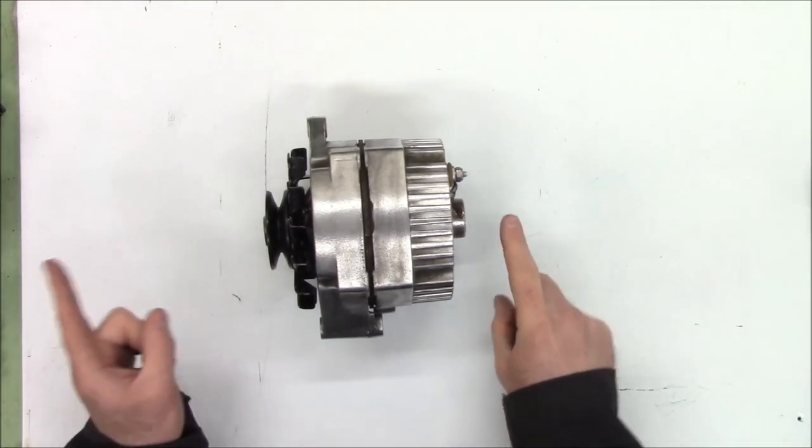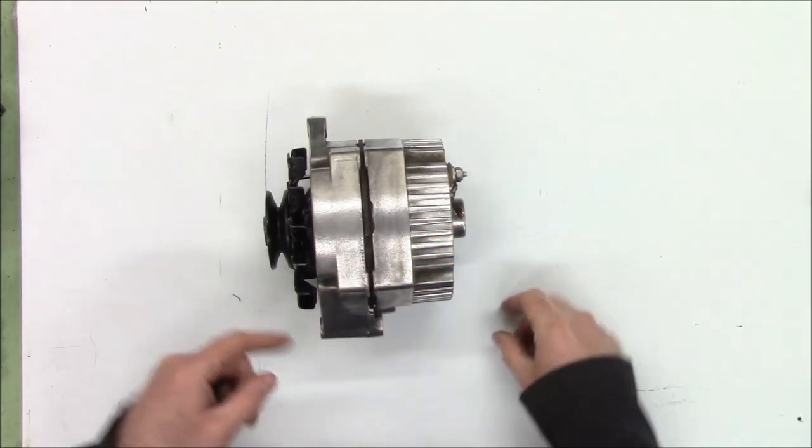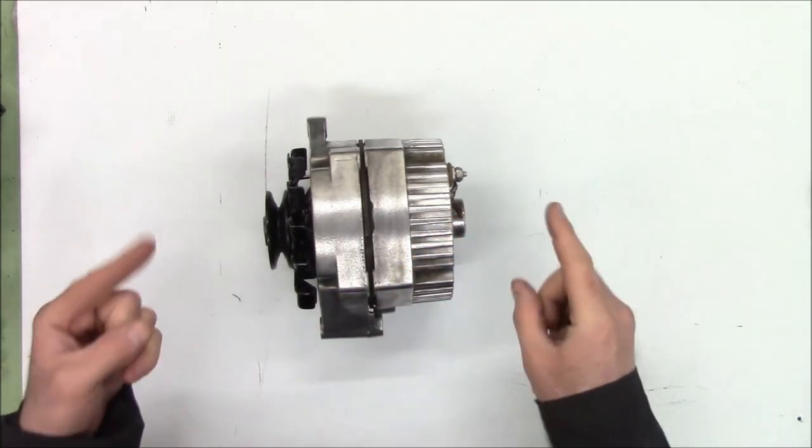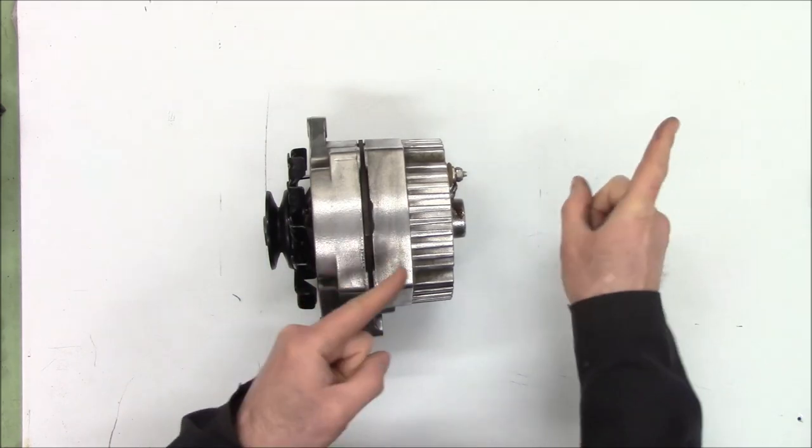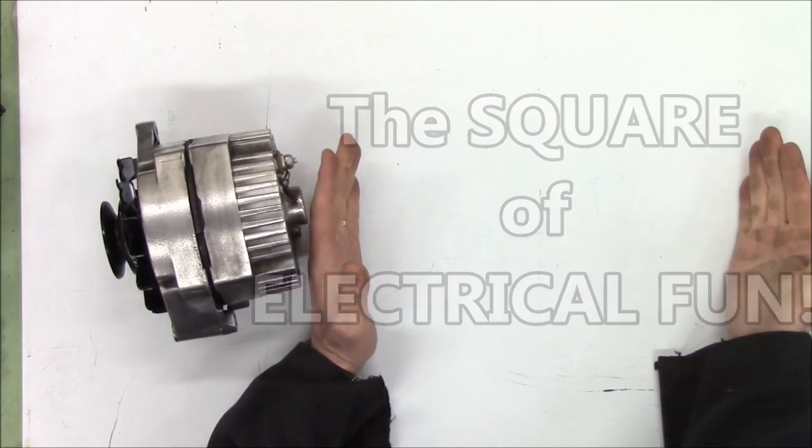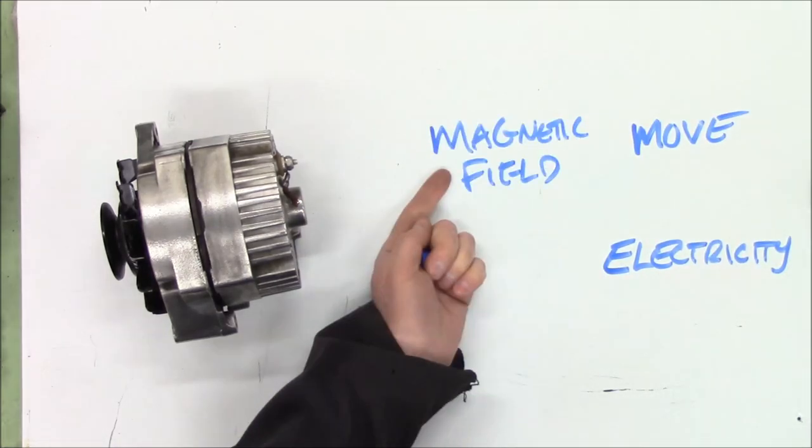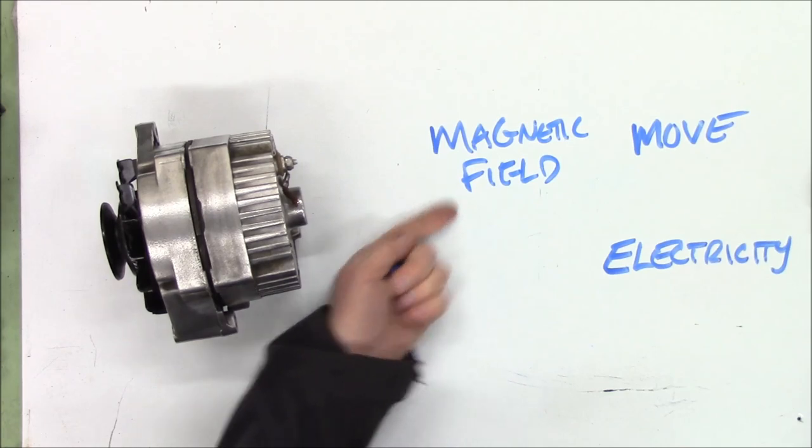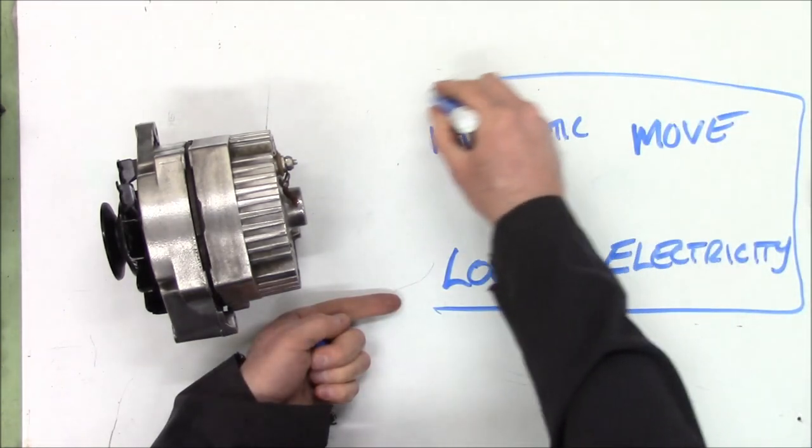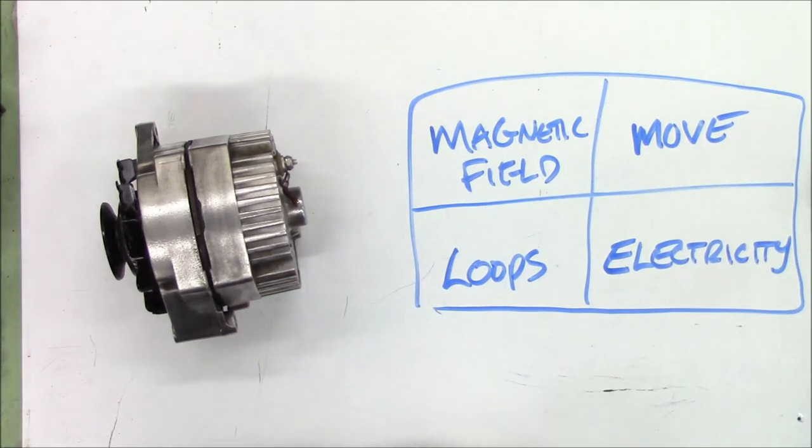You guys in level 1 should have already gone through the ignition system where you learned about pickle theory. You guys in level 2 should have already watched the video on pickle theory. So you already know the square of electrical fun. And you may recall, if you want electricity, you're going to need to move a magnetic field past some loops. That is your square of electrical fun. It shows up everywhere in the automobile.